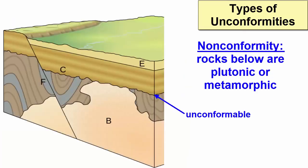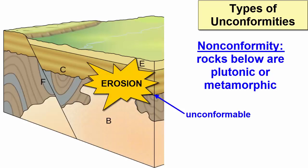Nonconformities are unconformities with intrusive igneous rock or metamorphic rock below and parallel sedimentary rock layers or lava flows above. The layers on top, which originally formed at the surface, sit atop uplifted and eroded igneous or metamorphic rock that originally formed at depth. Bringing deep rocks to the surface requires significant uplift and erosion and the loss of many layers of rock — many missing books in our geologic history.